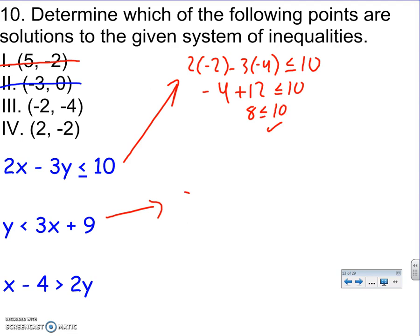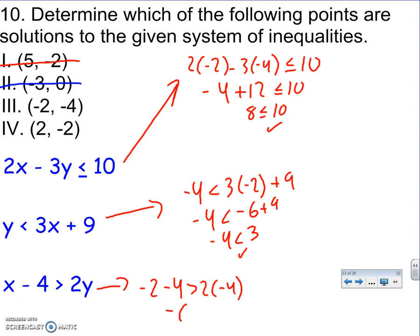y. So that's -4. Less than 3 times -2. Plus 9. That's -4. Less than -6 + 9. -4 is less than positive 3. That's also true. Good. I'll try one more. x. So that's -2, minus 4. It's greater than 2 times y. -6 is greater than -8. That's also true. So that's good. That's one of them.